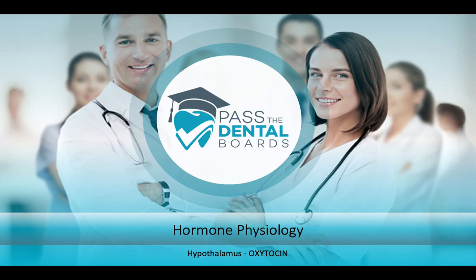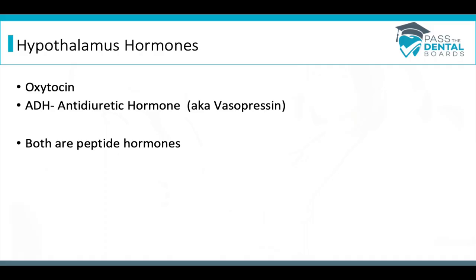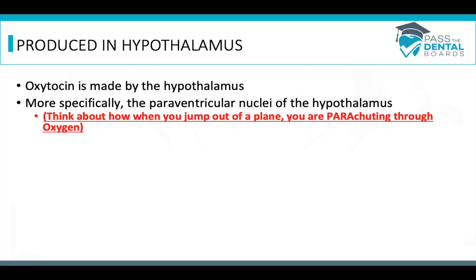In this lecture, we'll be focusing on the hormone oxytocin, which is produced by the hypothalamus. The two main hypothalamus hormones we need to keep track of are oxytocin and ADH, which stands for anti-diuretic hormone. That one has another name you'll sometimes see, and that is vasopressin. Both of these are peptide hormones.